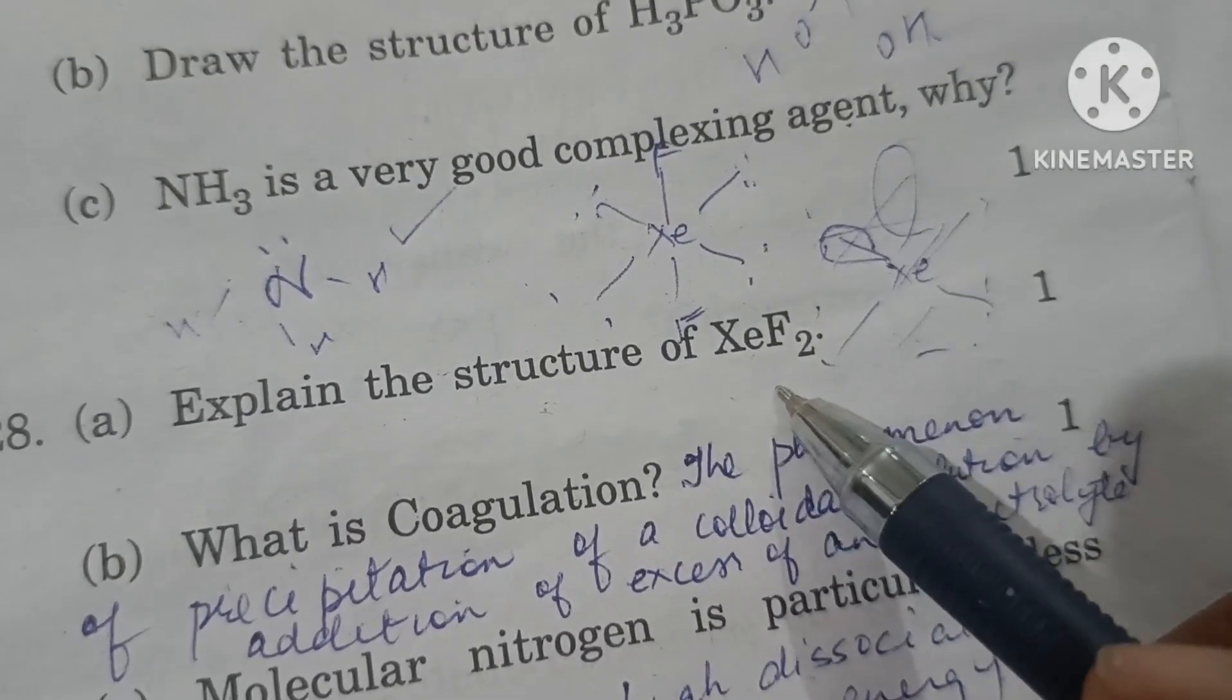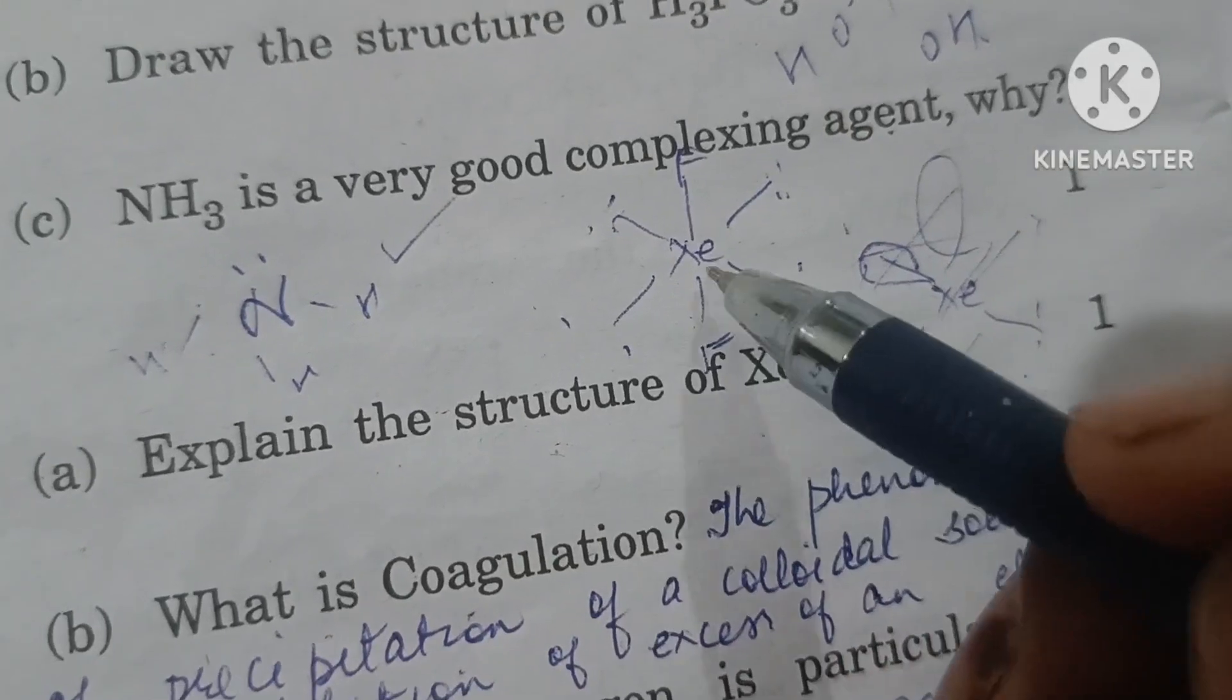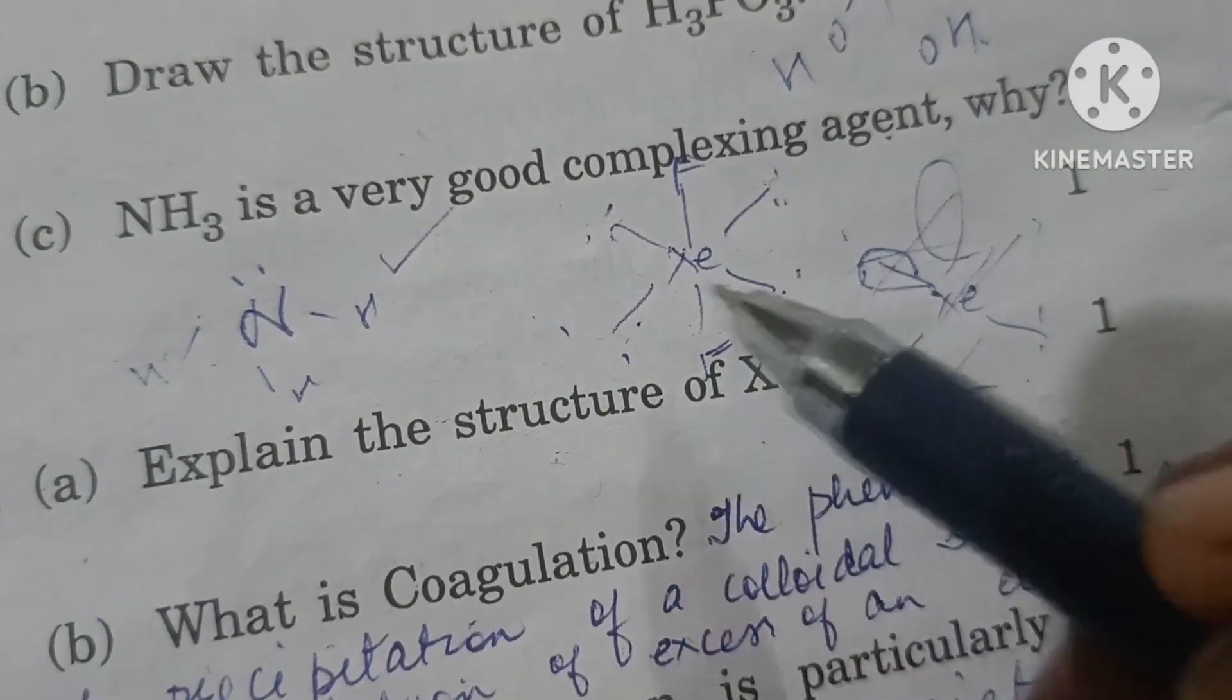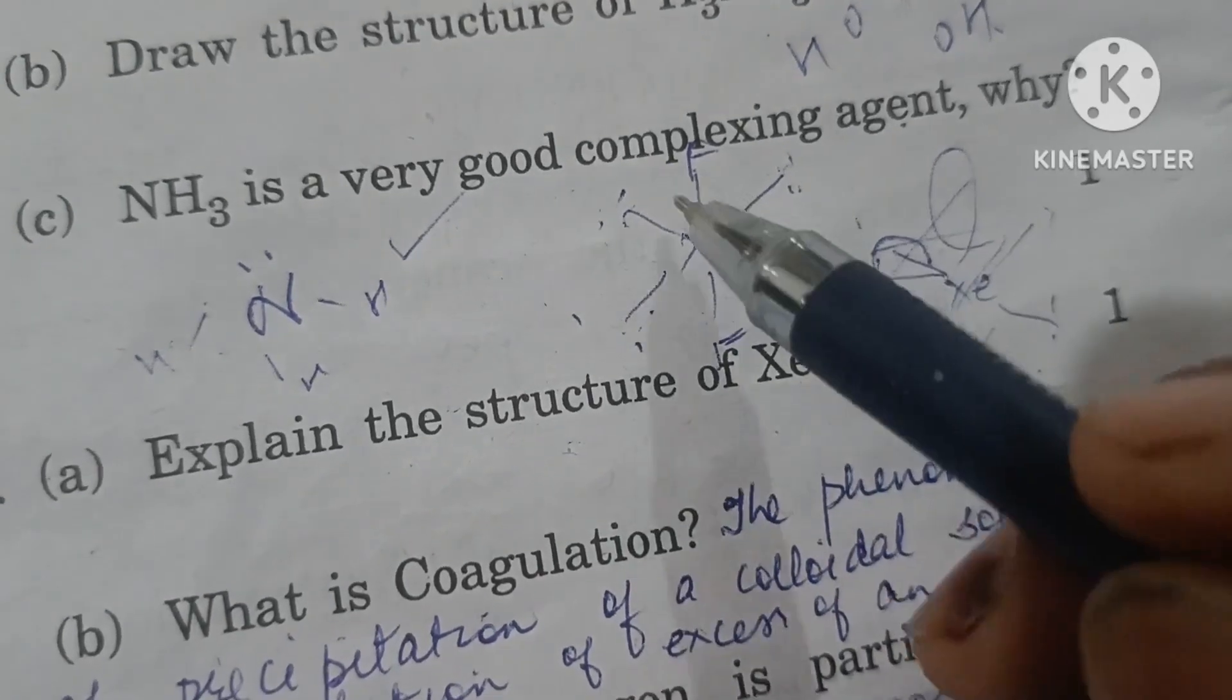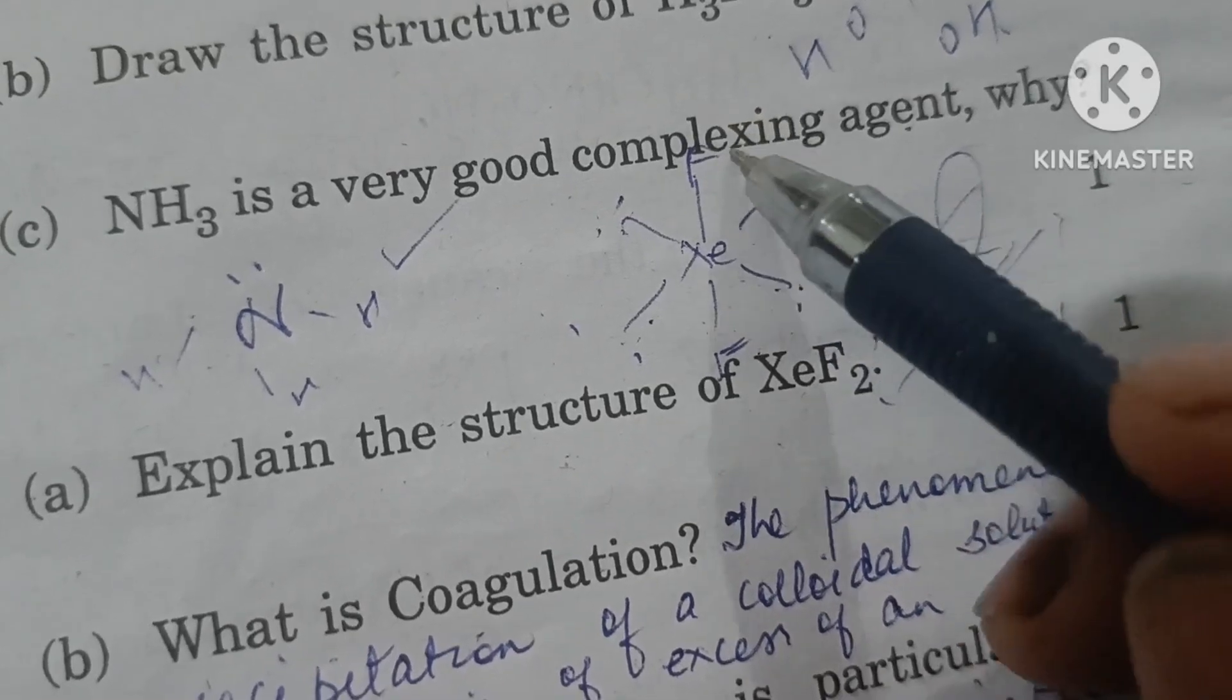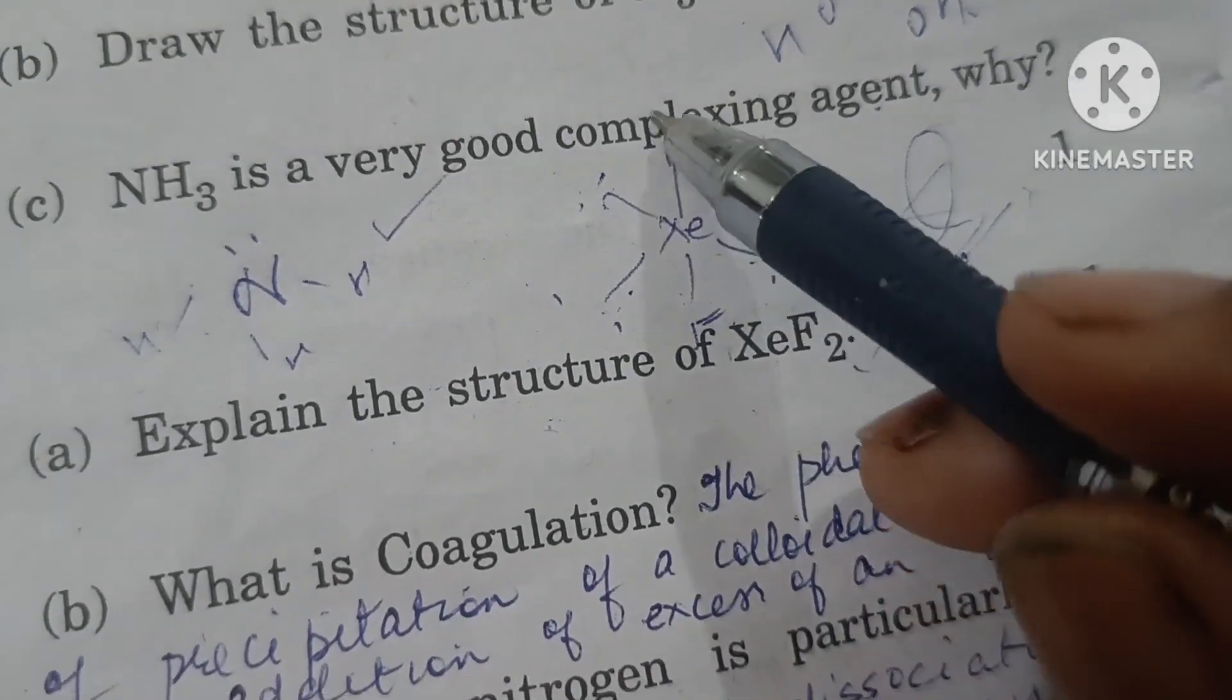Explain the structure of XeF2. In XeF2, there is sp3d2 hybridization. Four positions of octahedral geometry are occupied by lone pairs of electrons. Only above and below the plane have bonds with fluorine atoms, so the overall structure is linear.